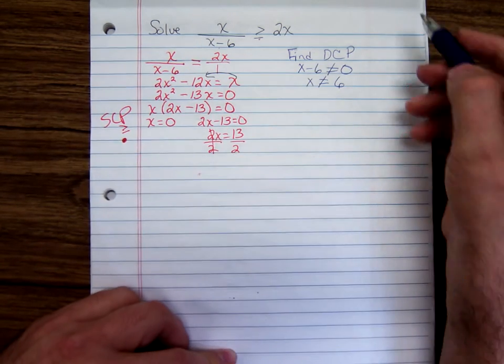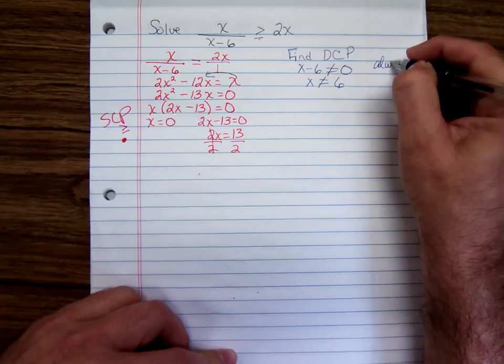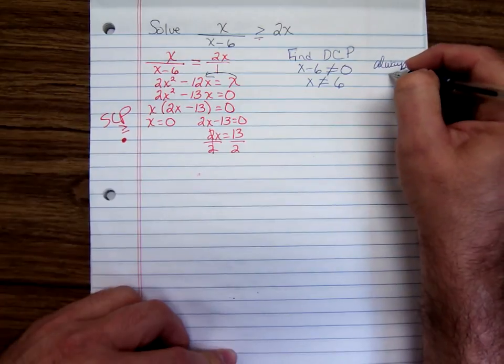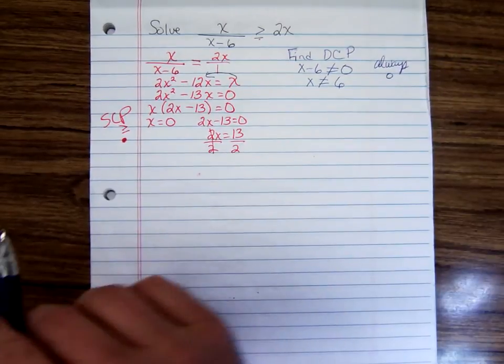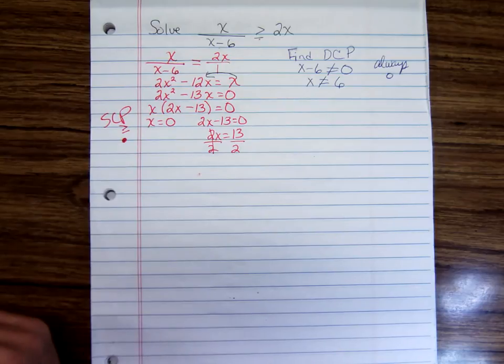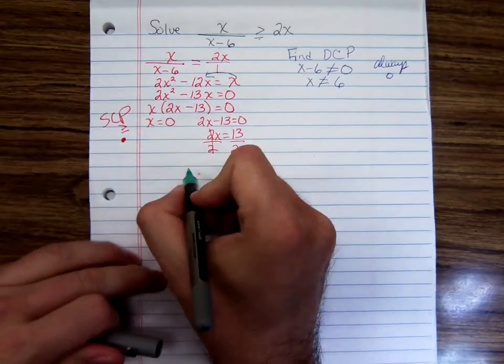For any denominator cut point, when you label that on the number line, it'll always be an open circle. Now let's draw a number line and test an interval.